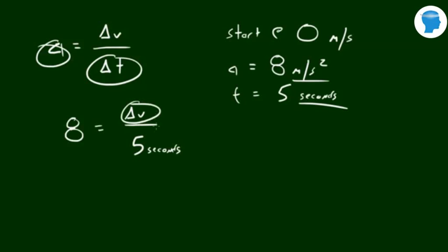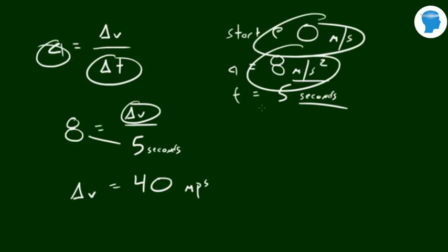In order to get the change in velocity, what we need to do is we need to multiply the acceleration and time. Whenever I say times two things together, I mean multiply. Let's go ahead and multiply 8 times 5 in order to figure out the change in velocity. The change in velocity is equal to 40 meters per second. So after 5 seconds, accelerating at this rate, at a starting point of not moving at all, we would be going 40 meters per second.